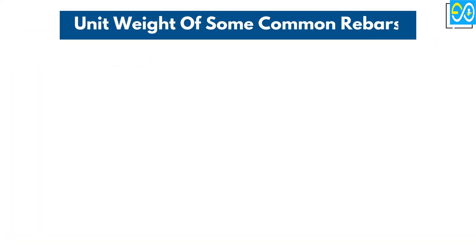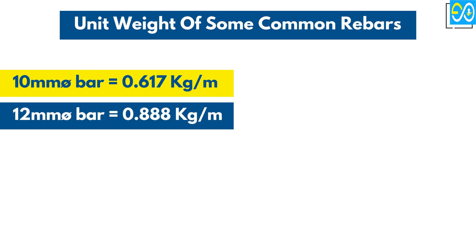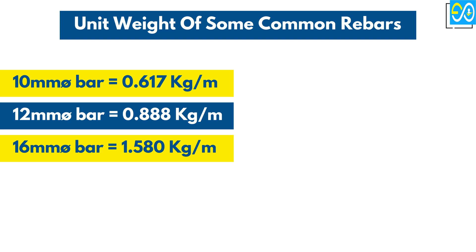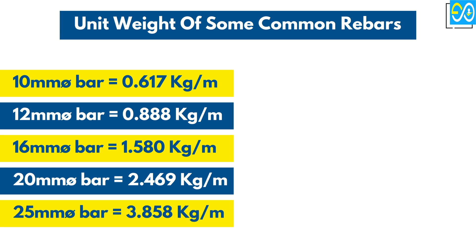Unit weight of some common rebars. 10 millimeters diameter bar equals 0.617 kilogram per meter. 12 millimeters diameter bar equals 0.888 kilogram per meter. 16 millimeters diameter bar equals 1.578 kilogram per meter. 20 millimeters diameter bar equals 2.469 kilogram per meter. 25 millimeters diameter bar equals 3.858 kilogram per meter.